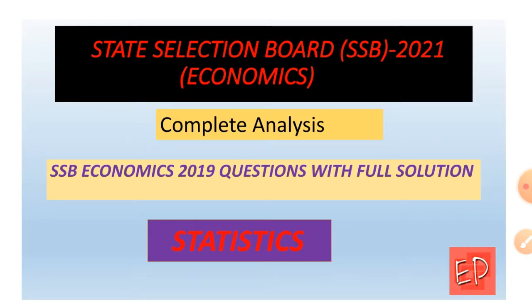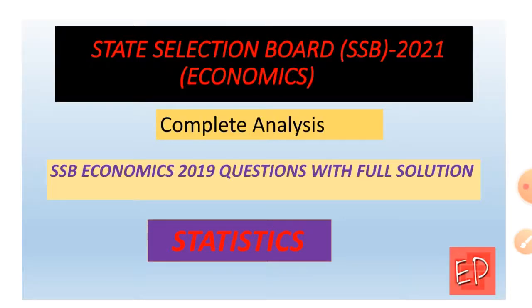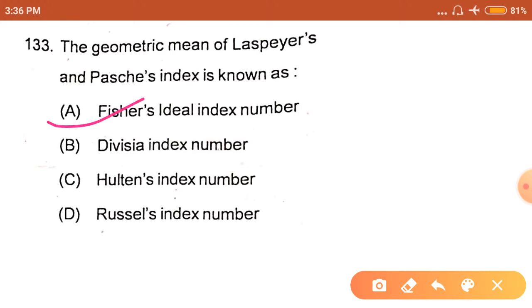Question number 133: The geometric mean of Laspeyres and Paasche's index is known as... The answer is option A, which is Fisher's ideal index number, because Fisher's index number is the geometric mean of Laspeyres and Paasche's index number.